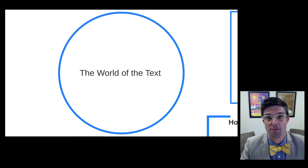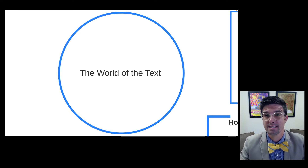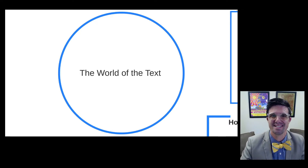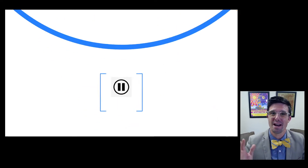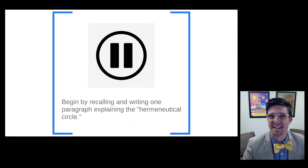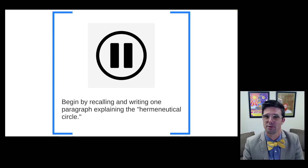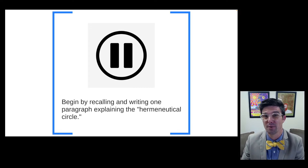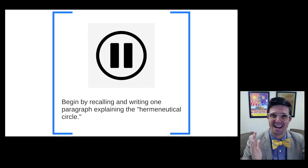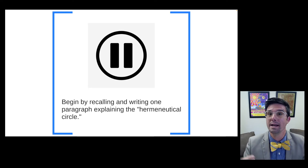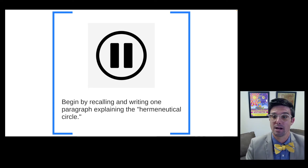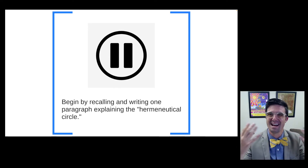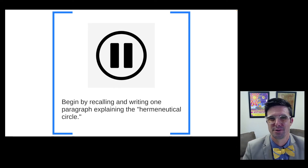In this video, we overview the world of the text and some of the different ways you might approach it while doing exegesis. To start us off, I want you to recall what we mean when we talk about the hermeneutical circle. Go to that folder or notebook where you are doing your lecture pauses and write one paragraph explaining what the hermeneutical circle is. Once you've done that, unpause and come back for a brief refresher.